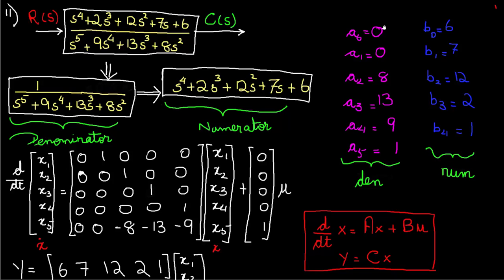Same thing for the denominator for which I use A. A0 is going to be 0 because if you look at the denominator, we don't have a constant. So it's going to be a 0. And then A1 is going to be 0 because you don't see any coefficient with s1. So we write that as 0. And of course A2 is going to be 8 because it's s squared and so forth that A3 is 13, A4 is 9, and A5 is 1.